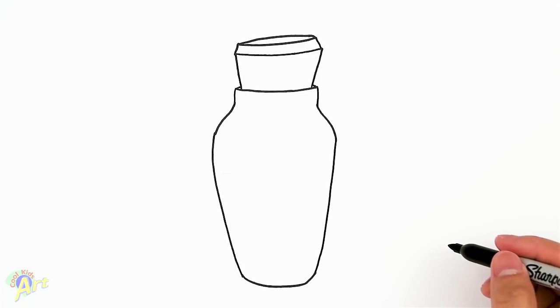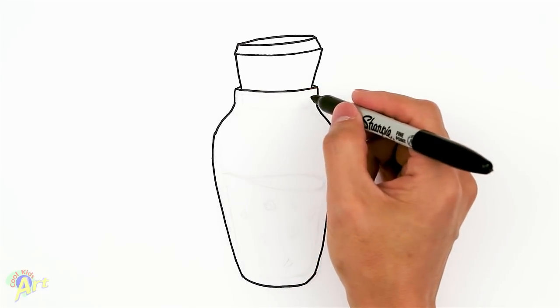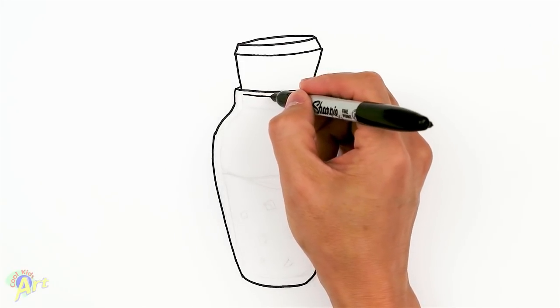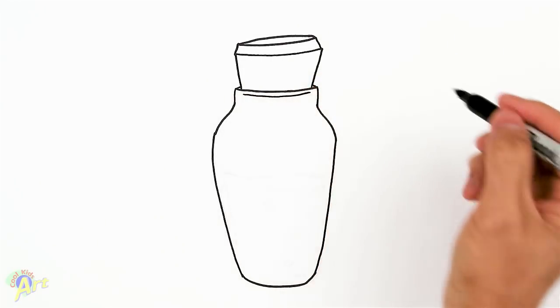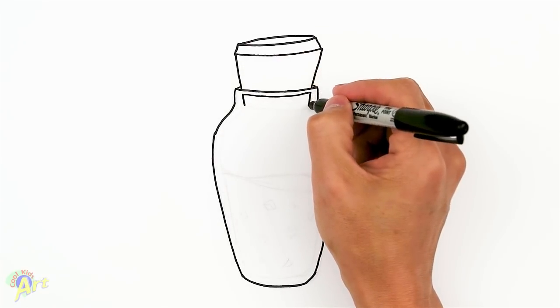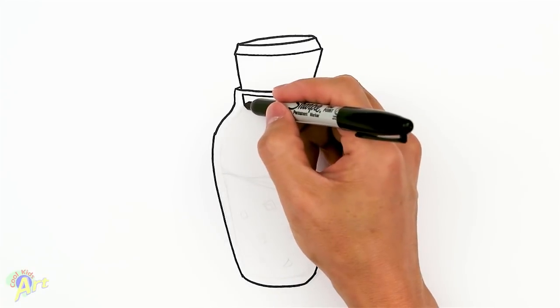And now in here, we can still see the cork because it's glass, so you want to draw a line across and then just kind of continue that cork in here. And then let's close it off.